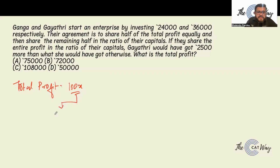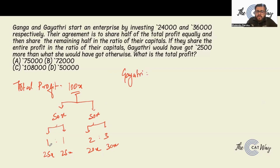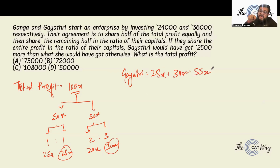The first 50x is split 1 to 1, so each gets 25x. The remaining 50x is split 2 to 3 (since 24,000 to 36,000 is 2 to 3), giving Ganga 20x and Gayatri 30x. So Gayatri gets 25x plus 30x, totaling 55x. If the entire profit were distributed in 2 to 3 ratio, Ganga would get 40x and Gayatri would get 60x.